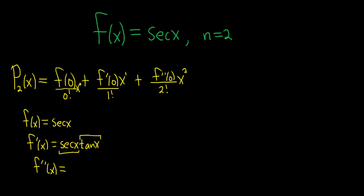Product rule says you take the derivative of the first piece. So in this case, the derivative of the first is secant tangent. That's the derivative of the first times the second piece, so tangent of x, plus the first piece, so secant x, times the derivative of the second piece. And the derivative of tangent is secant squared.